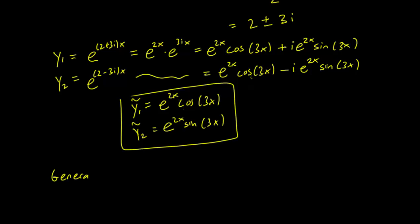And our general solution is going to be y equals c₁ e^(2x) cosine 3x plus c₂ e^(2x) sine 3x for our two arbitrary constants c₁ and c₂.